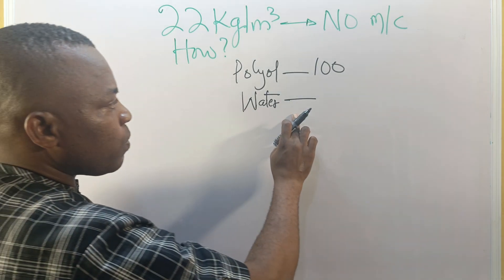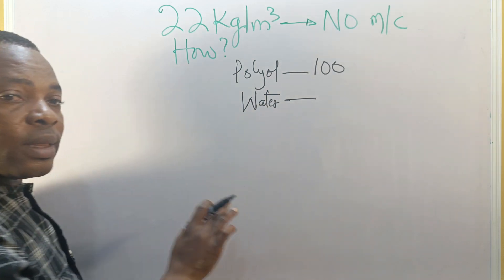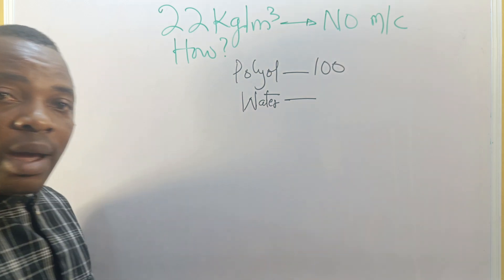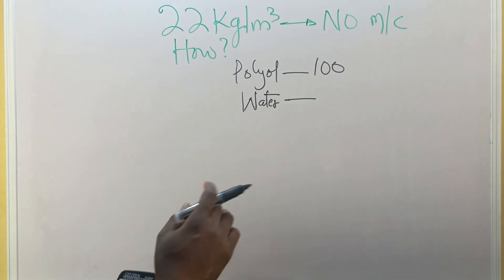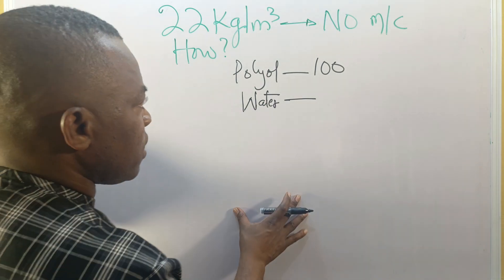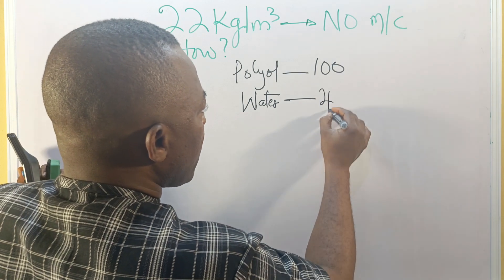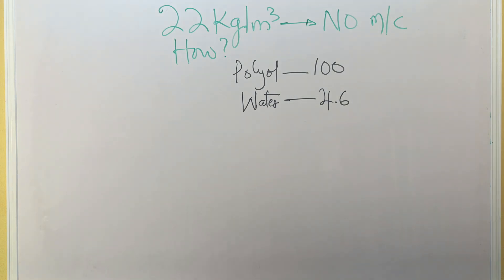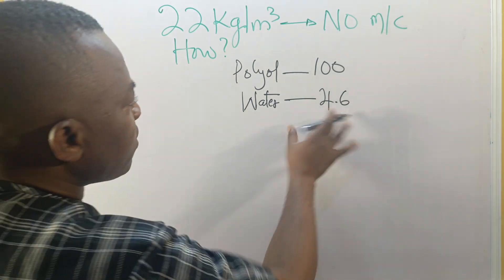So the density of this foam, we are going to use water here to control the density rather than using water and MC. You can produce foam without MC, but you cannot produce foam without water. Because water is a true blowing agent whereas methylene chloride is the auxiliary blowing agent. So in this case, we want to make a 22 density.